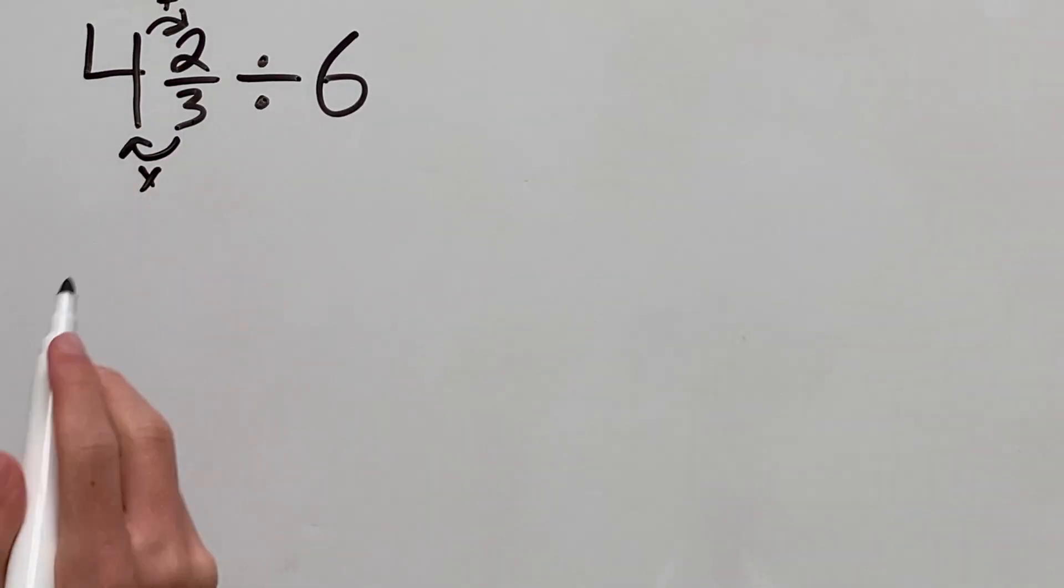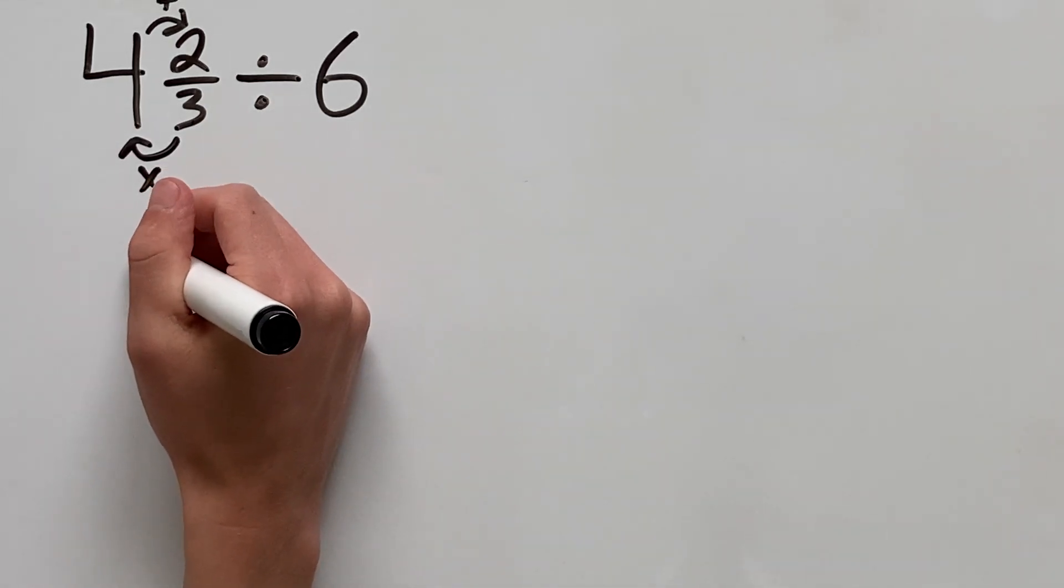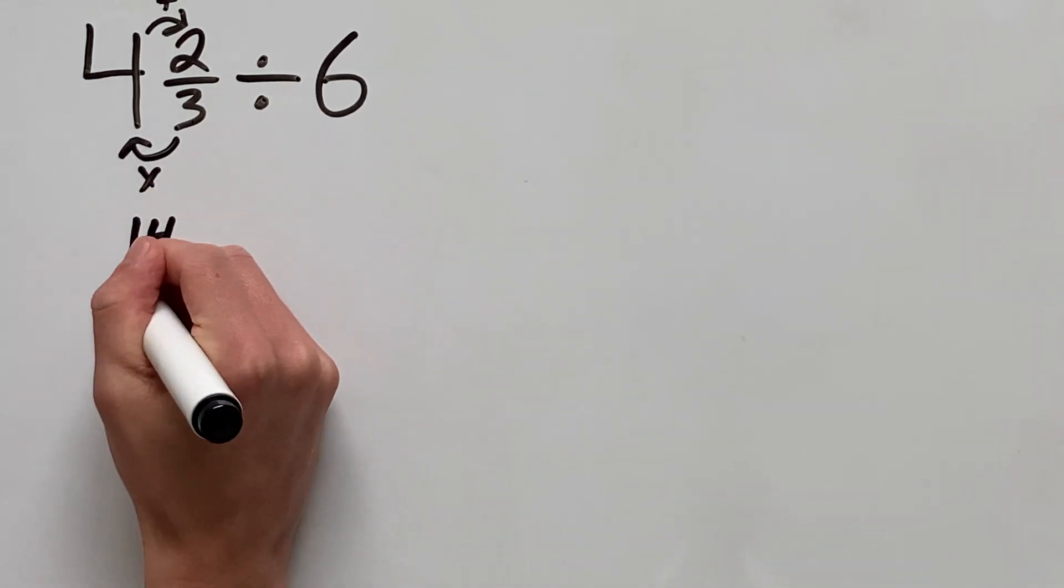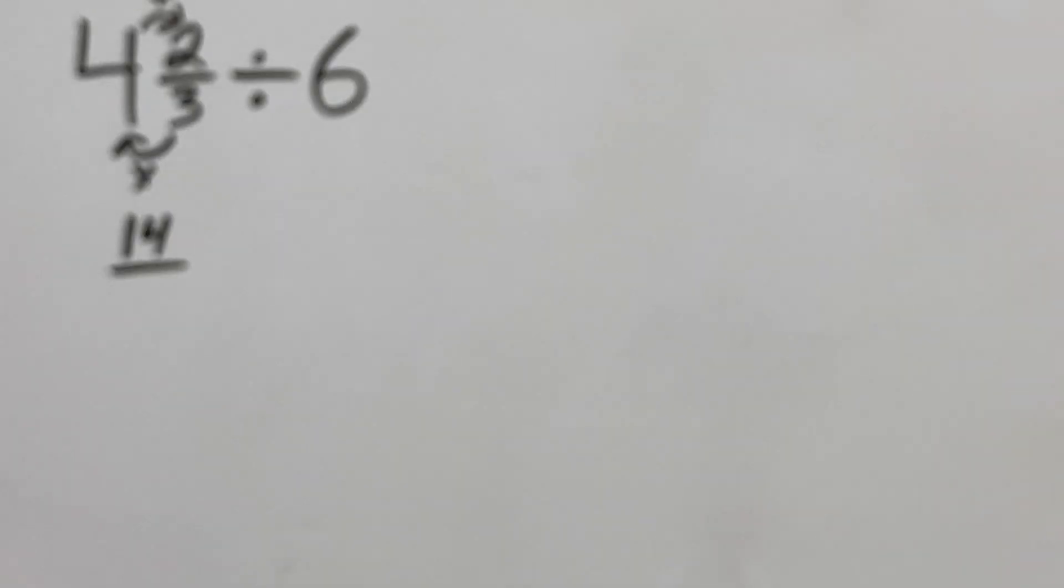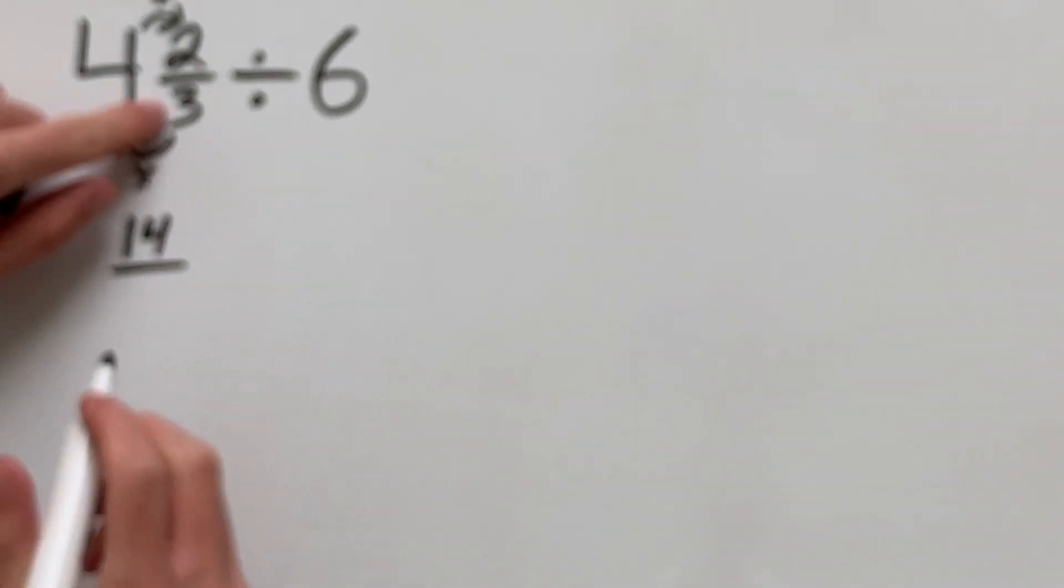So we have 3 times 4 which is 12 and we're going to add 2 which gives us 14. Our denominator will stay the same so it will stay as 3.